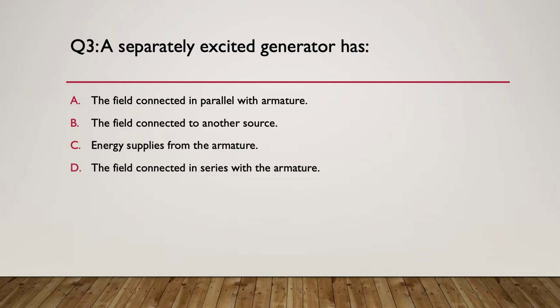Question three: a separately excited generator has — A: a field connected in parallel with the armature; B: a field connected to another source; C: energy supplied from the armature; or D: the field connected in series with the armature. So question three — a separately excited generator has which of these four characteristics? Pause here.